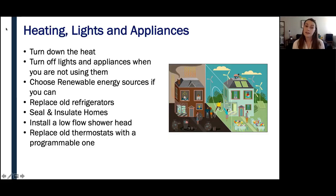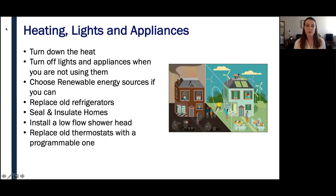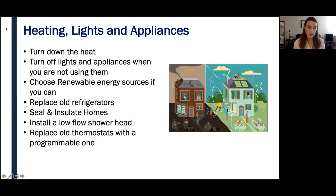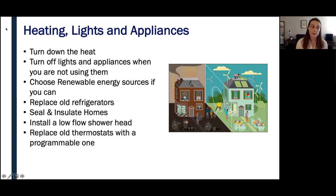Seal and insulate your home — trouble spots such as the attic, windows, and doors can allow heat and cool air to escape, leading you to use much more energy than necessary. Install low-flow shower heads and toilets to help control the amount of water you're using. Finally, replace old thermostats with programmable ones so you're able to lower your thermostat when you're sleeping, out of the house for work, or traveling.